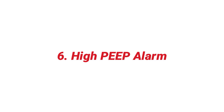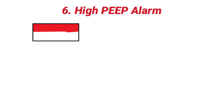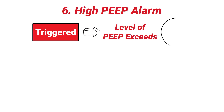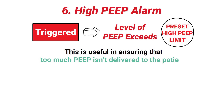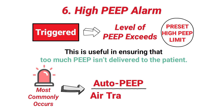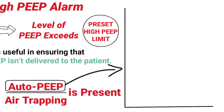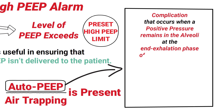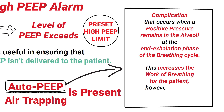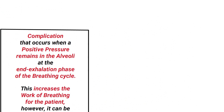Another alarm you need to know about is the high PEEP alarm. A high PEEP alarm in mechanical ventilation is triggered whenever the level of PEEP exceeds a preset high PEEP limit, ensuring that too much PEEP isn't delivered to the patient. This alarm most commonly occurs whenever auto-PEEP or air trapping is present. Auto-PEEP is a complication that occurs when positive pressure remains in the alveoli at the end of the exhalation phase, increasing the work of breathing. It can be corrected by prolonging the patient's expiratory time.